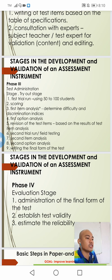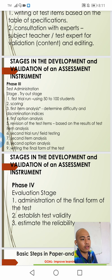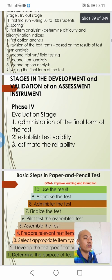For the sixth step, we conduct another trial, serving as our second trial. After this trial, we score again and go back through the steps — conducting item analysis and option analysis — then write the final form of the test based on the results of the second trial.